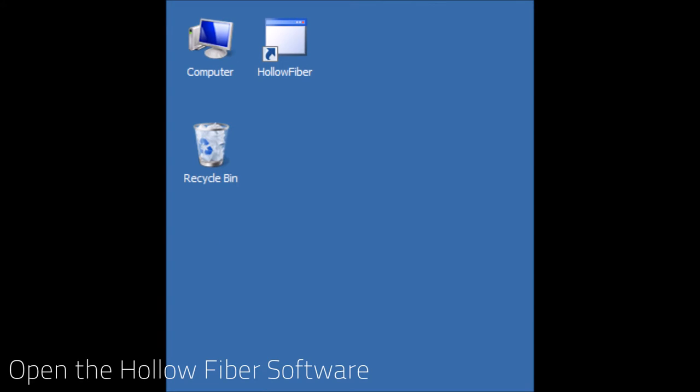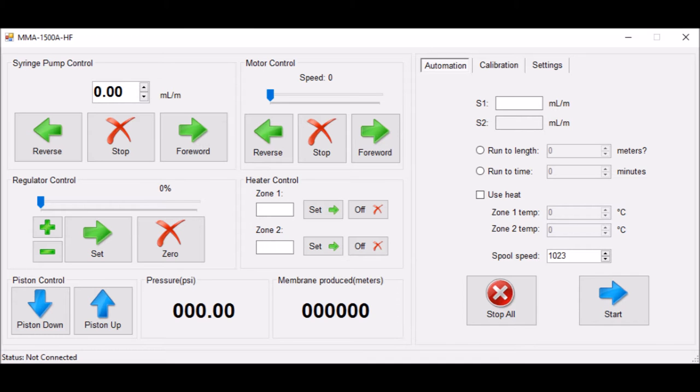To begin operation of the machine, first select the hollow fiber software icon. When the software opens, you will see a manual control panel on the left side of the window. From here, you can control the syringe pump, regulator, pneumatic piston, motor, and the heaters.